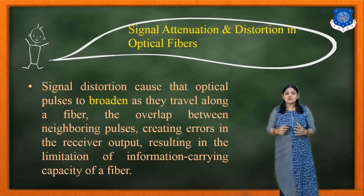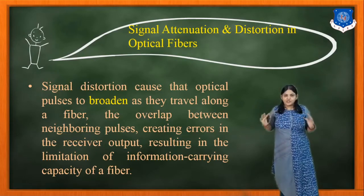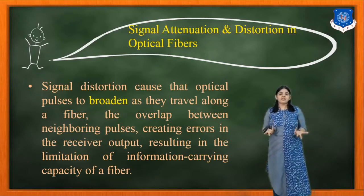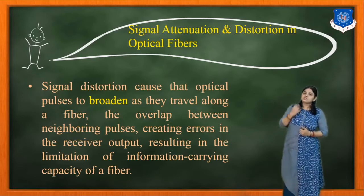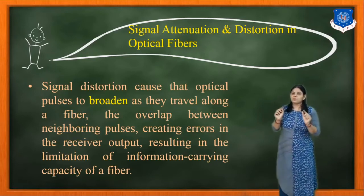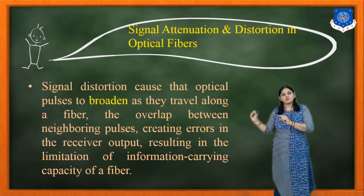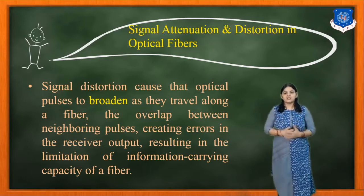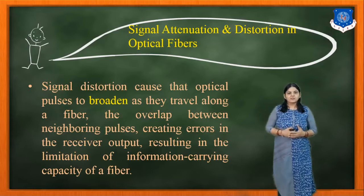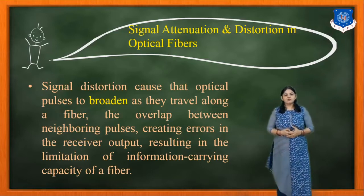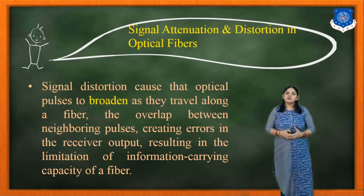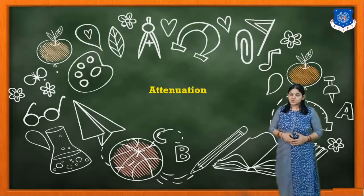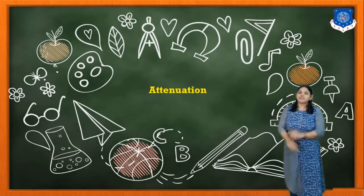The distortion limits the information-carrying capacity of the fiber. Signal distortion causes optical pulses to broaden. Whatever the input pulse, if you get that pulse at the output end, the broadening of the pulse signifies distortions in the transmission. The overlapping pulses create errors in the receiver output, resulting in a limitation of the information-carrying capacity of the fiber. Now we will focus on the attenuation.